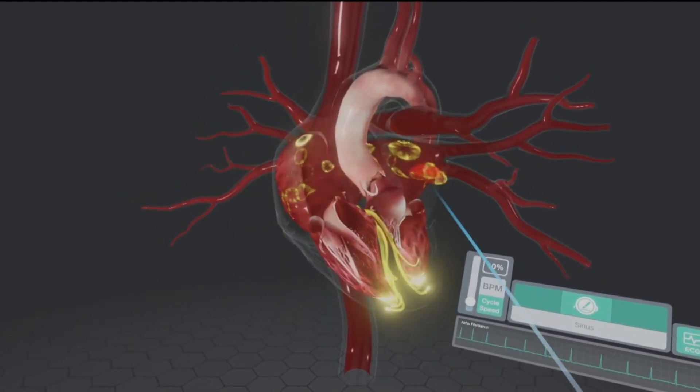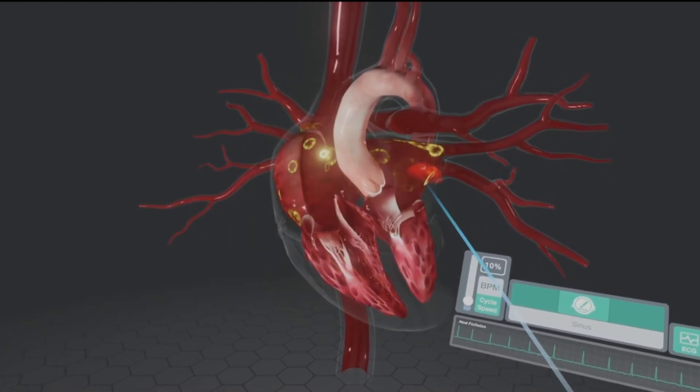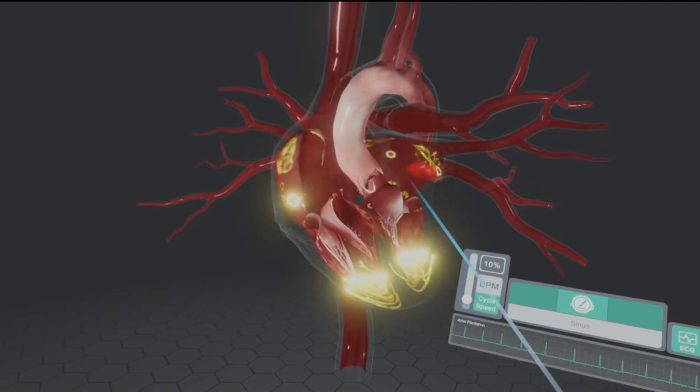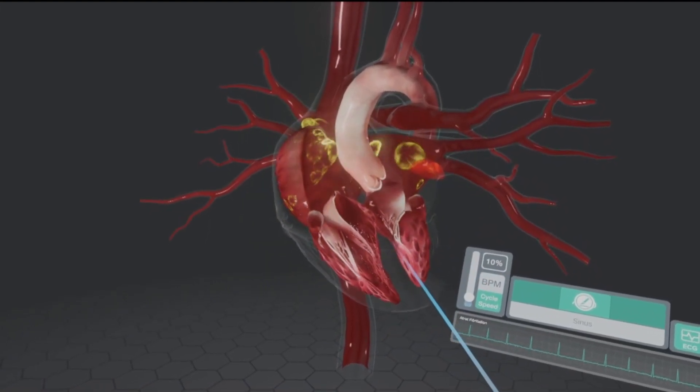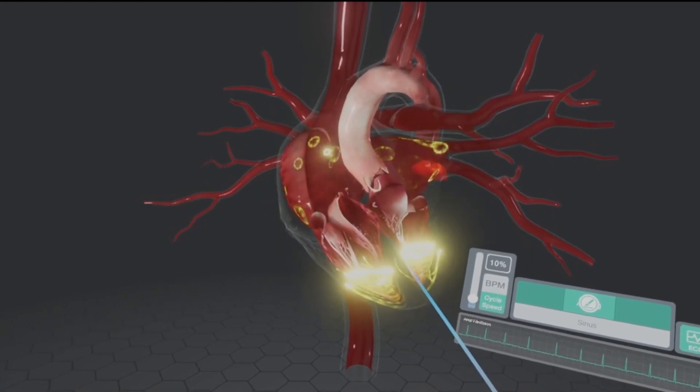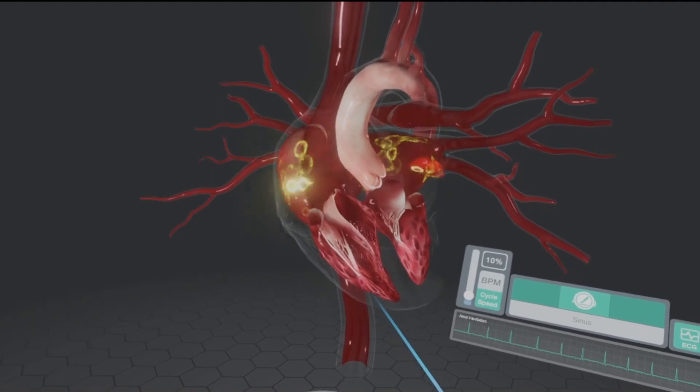So let's slow down the cycle speed to 10%. Look at all of the firing of the foci in the atria. A whole bunch of impulses being begun in the atria. But only certain impulses are going to be conducted through the AV node and then into the ventricles.